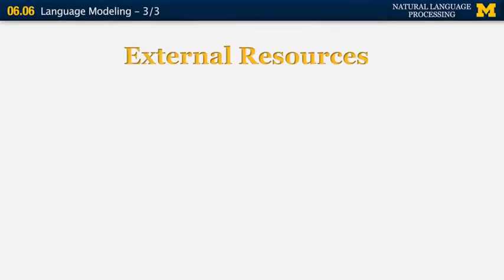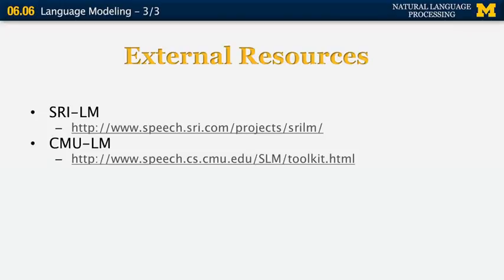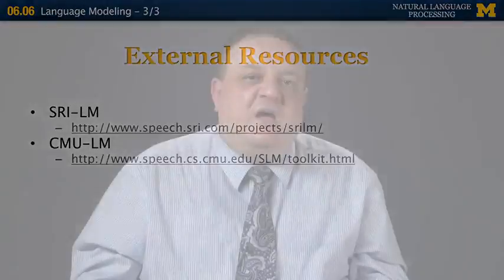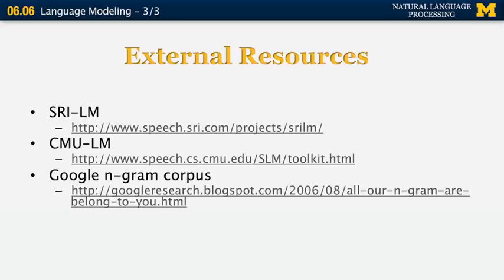To conclude this section, here are several external resources relevant to language modeling. The first is the SRI Language Modeling Toolkit, available from the SRI website. The second is the CMU Language Modeling Toolkit from the CMU website. Both are very popular — the SRI system is more popular these days. They allow you to train maximum likelihood estimates for any n-gram length, including 4- and 5-grams, compute perplexity, label sequences, and estimate probabilities using back-off and interpolation. There is also a large corpus of Google n-grams available on the internet, with data from billions of documents.